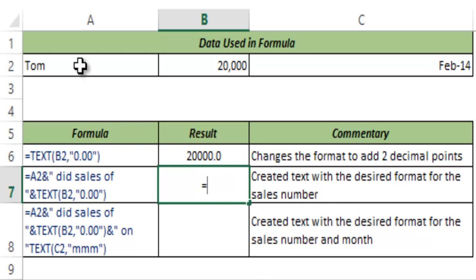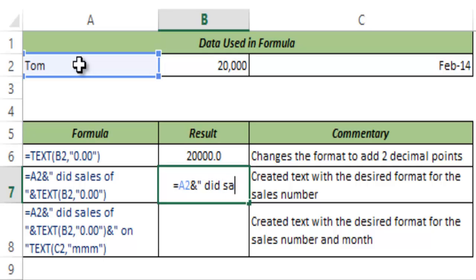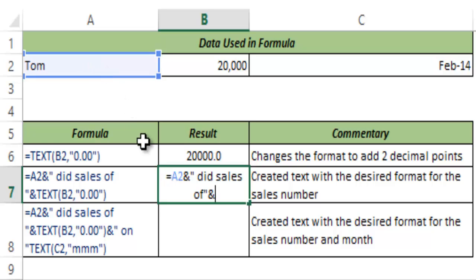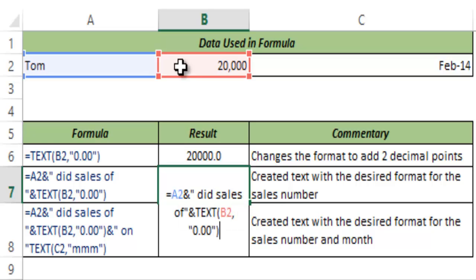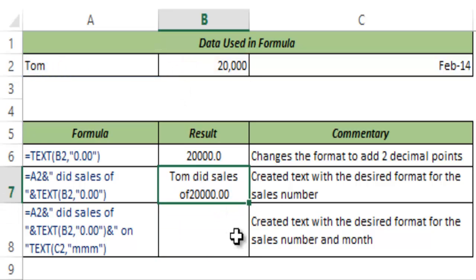Let me show you how this works. I first reference A2 which has the text 'Tom' and I use ampersand to join it to the text 'did sales of', then another ampersand, and here I use the TEXT function where I reference B2 with the format 0.00. After pressing Enter, you can see it gives the text 'Tom did sales of 20,000' with two decimal zeros.